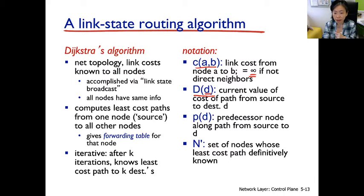Second notation is D(d). D here is indicating that for a particular destination, the path from this router doing the computation to this destination, what is the cost of the path currently? So capital D here actually stands for distance. This is also saying what is the current distance to a particular destination d for this router doing the computation.